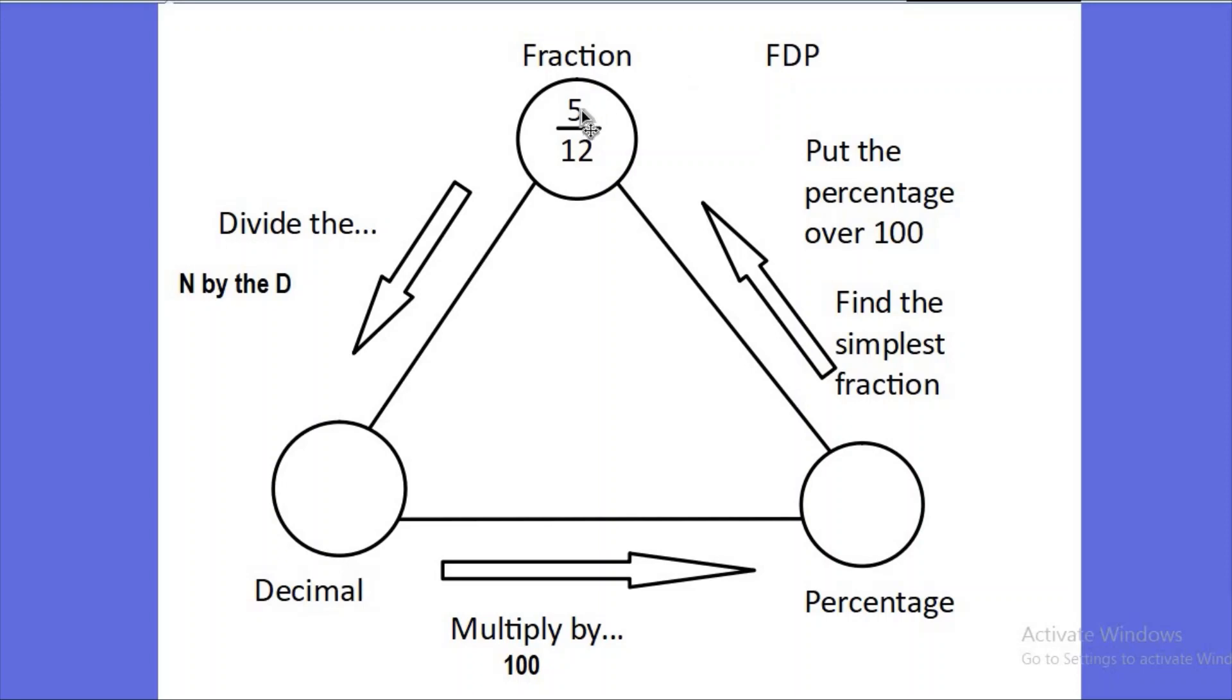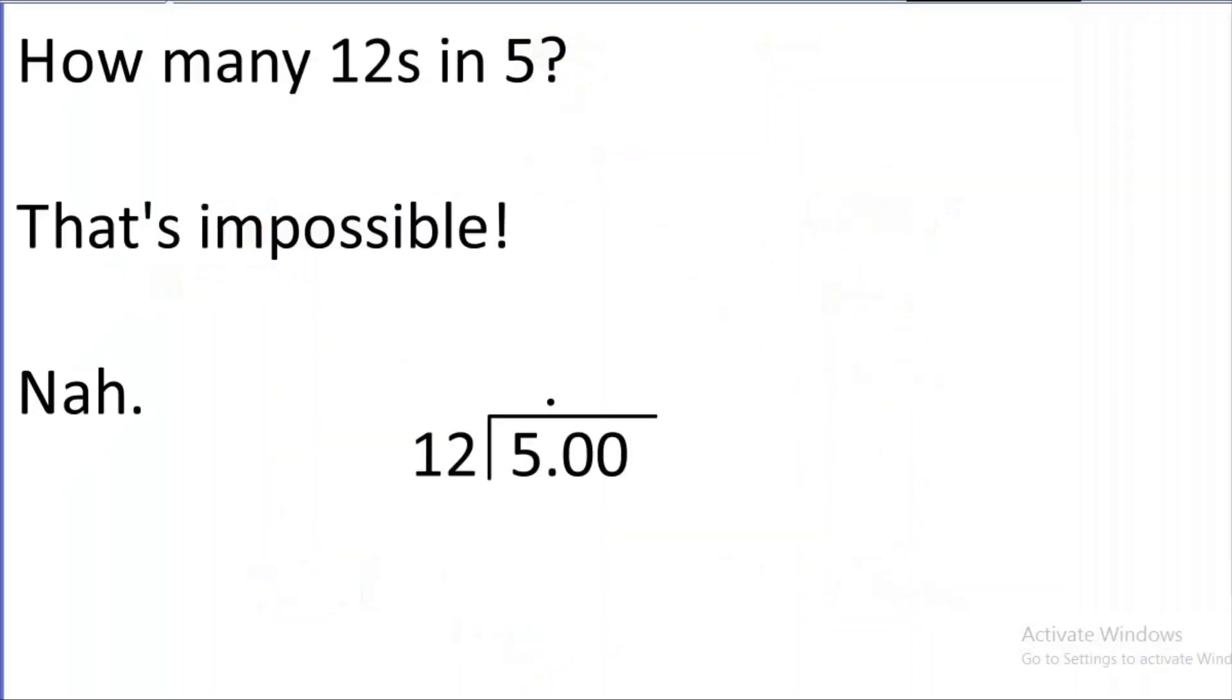Tricky? Yes. Impossible? No. I have faith you can do this. We need to make sure that we are not finding out how many fives are in 12, but how many twelfths are in five. To do that, we do 5 divided by 12, and we put our decimal point here. Now don't worry, I only want you to do it to two decimal places and I'll show you exactly how to do that. 'That's impossible!' I hear you say. Nah.